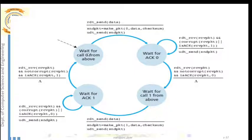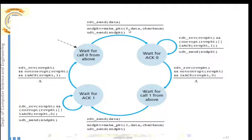The sender is waiting for data to arrive with sequence number zero. Upon receiving, it calls the rdt_send function. A packet is created with sequence number zero, a checksum is added to the data, and that packet is sent to the network layer below — same as RDT 2.1.